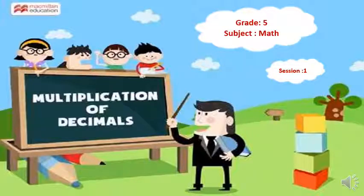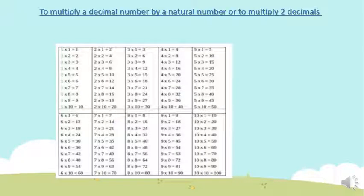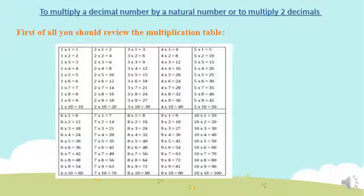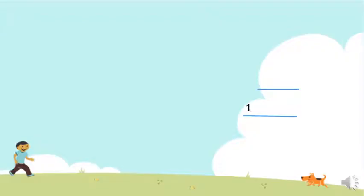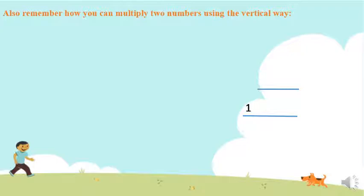Hello Grade 5, and welcome to our new lesson on multiplication of decimals. This is session 1. To multiply a decimal by a natural number, or to multiply two decimal numbers together, you should first review the multiplication tables. Please review them because we need them while we are multiplying numbers. We also have to remember how to multiply any two natural numbers using the vertical method.